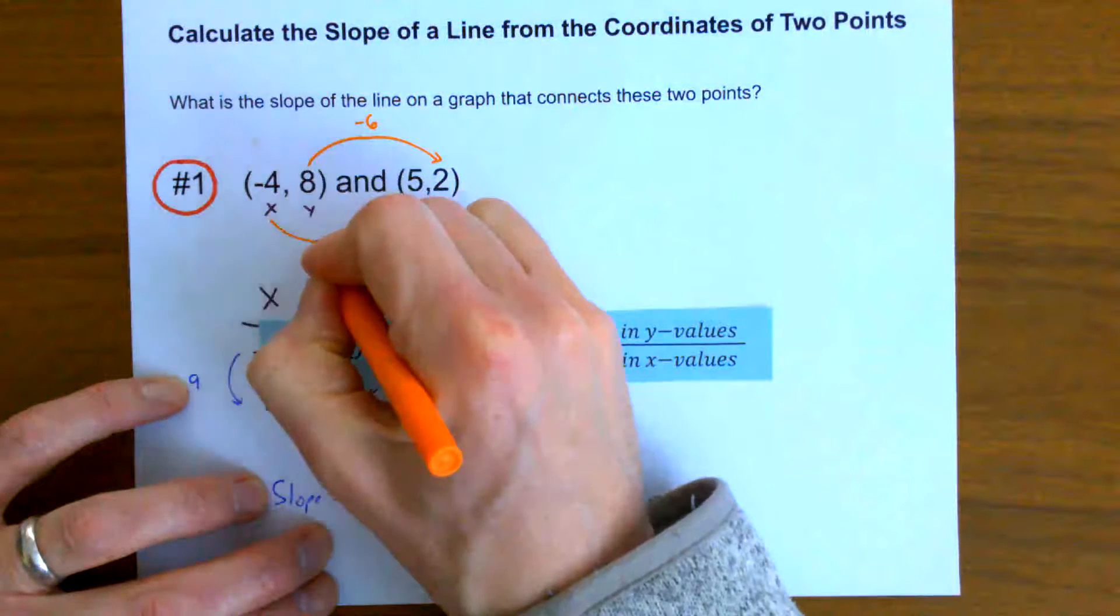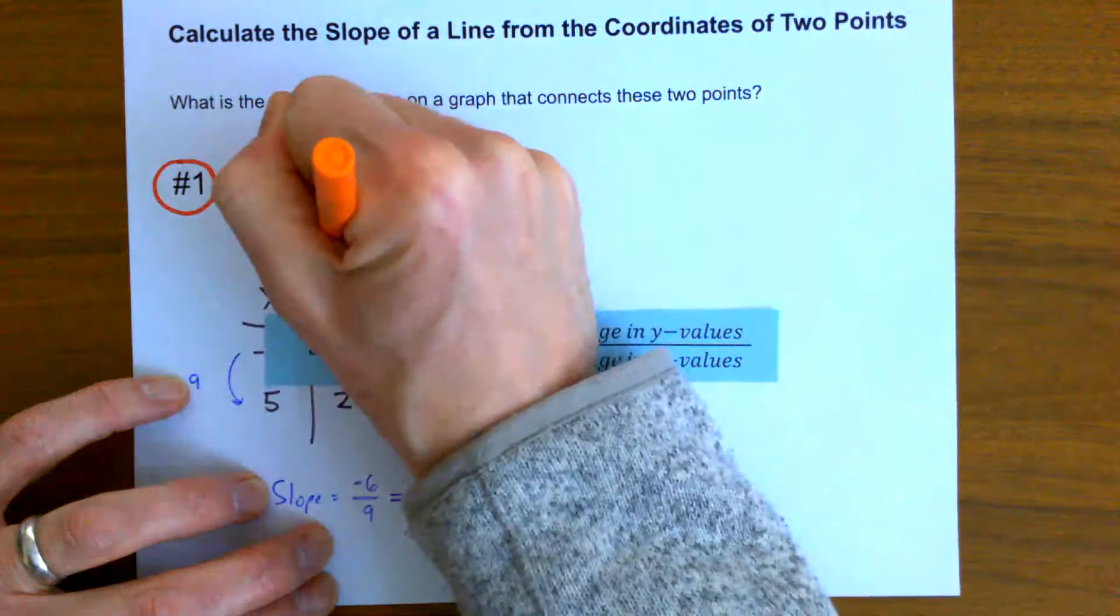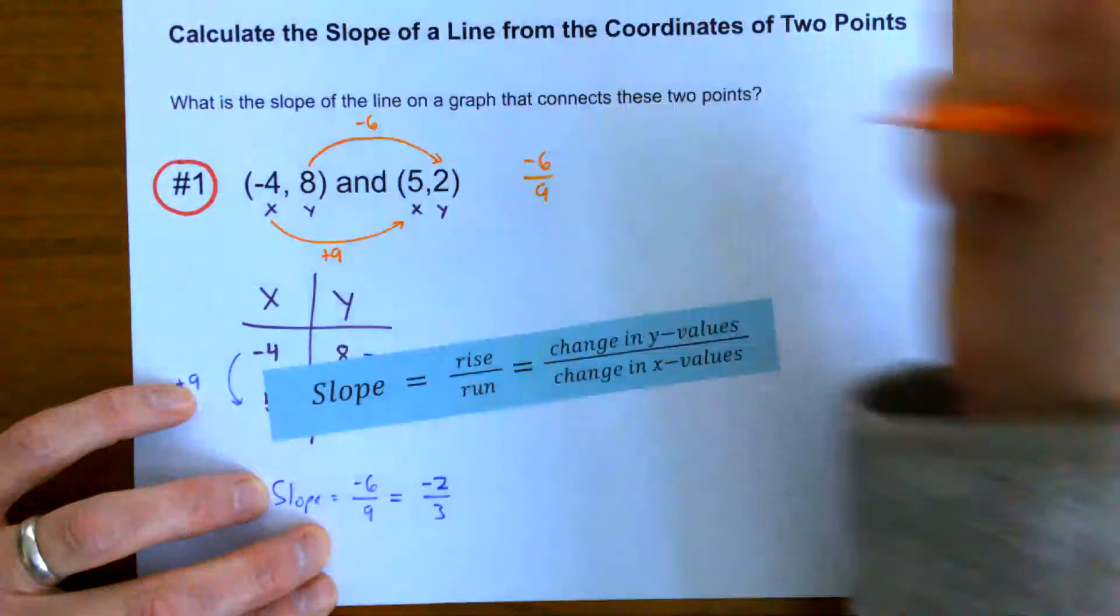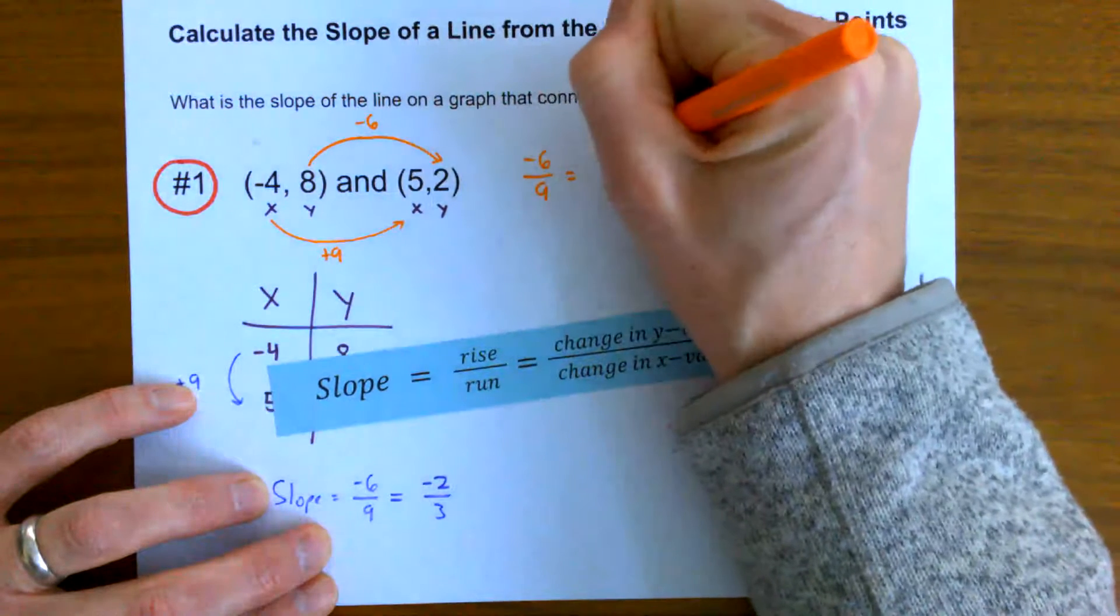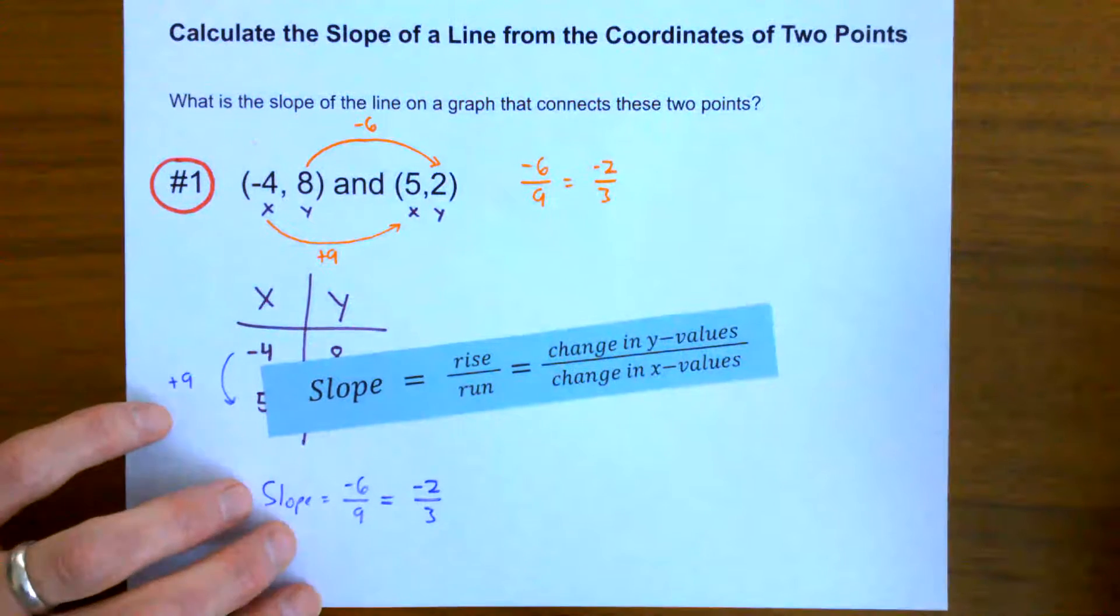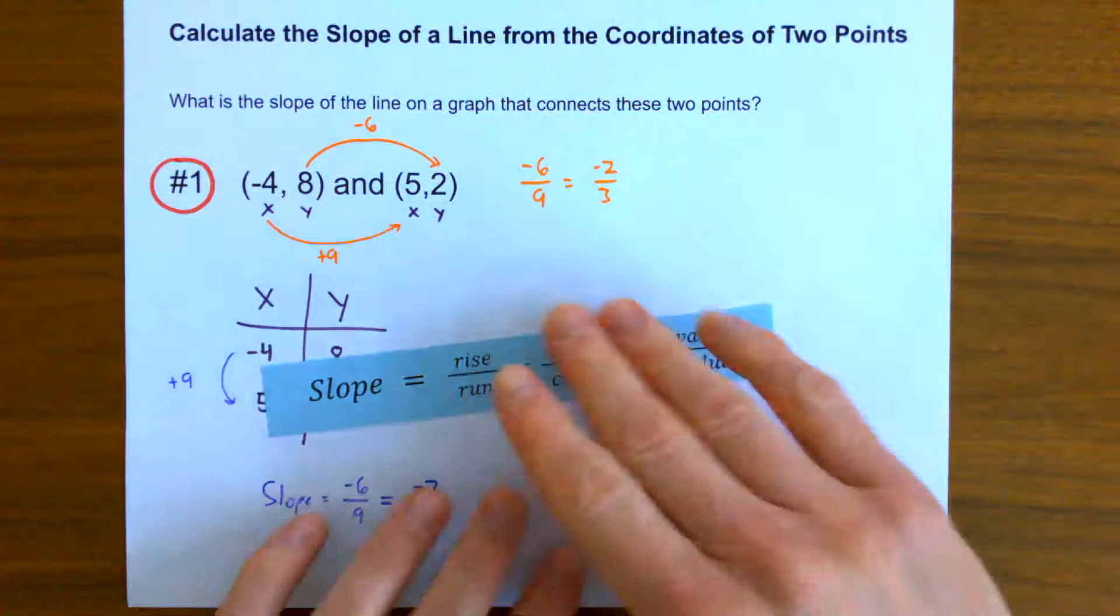And now my x values, going from here to here, from negative four to five, those are increasing by nine. So my change in y over my change in x is negative six over nine, or negative two over three. I lose two y values every time I gain three x values. Those are a couple of different ways you can get the slope of a line from the coordinates.